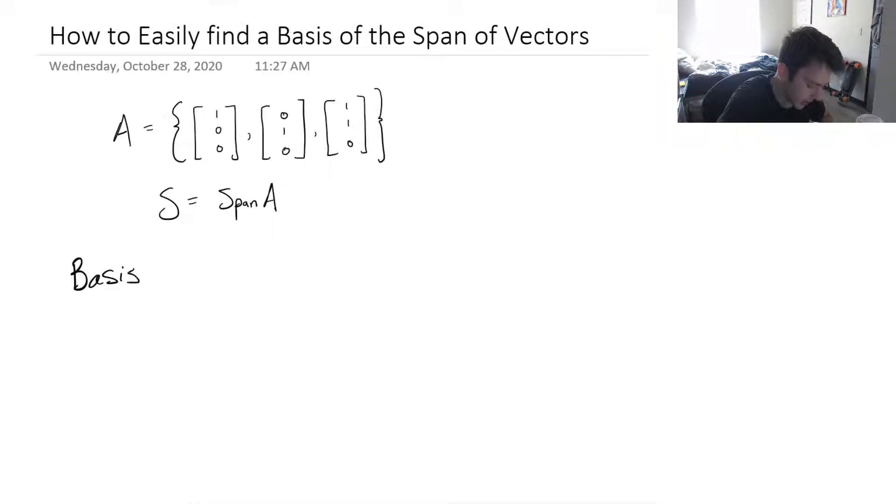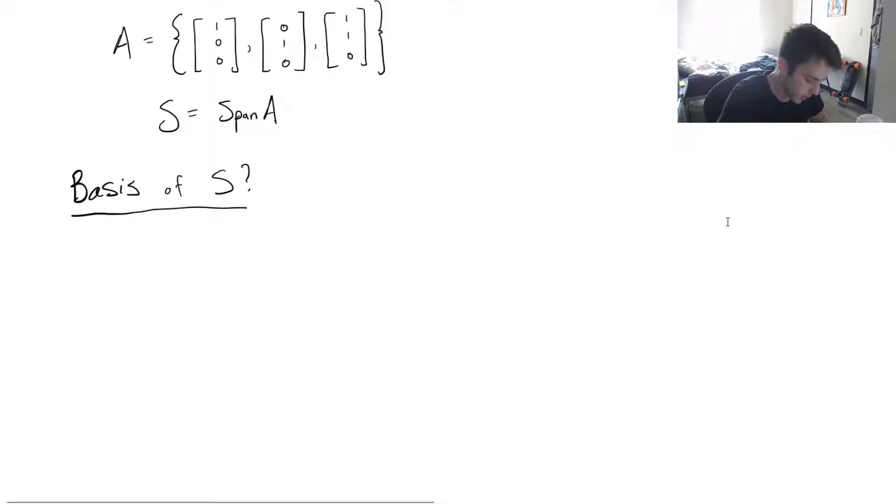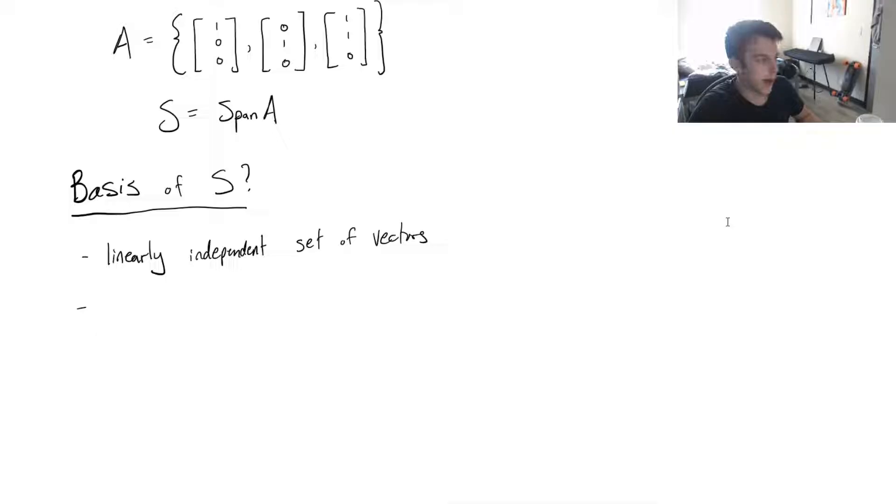Let's say that we're trying to find the basis of S. Let's remind ourselves, what does the basis of S actually mean? The basis of S, we know that a basis is going to be a linearly independent set of vectors. And that set of vectors, we know that it has to span all of the vector space that it's the basis of. So it will span all of S, all of the vector space S.